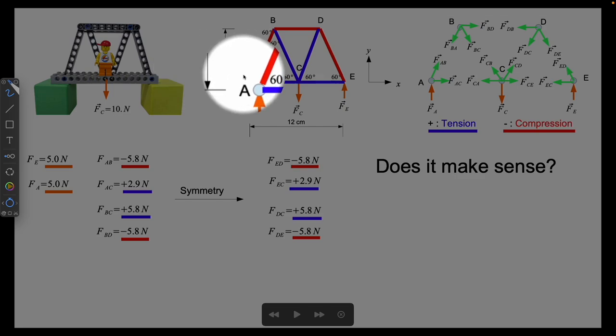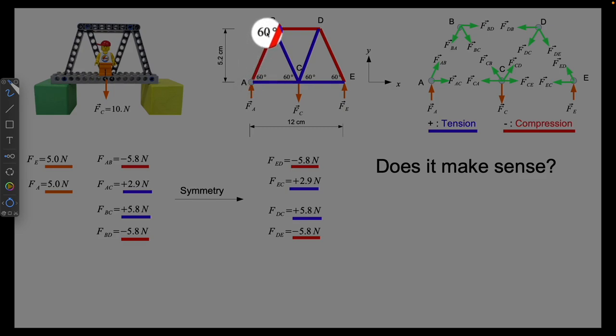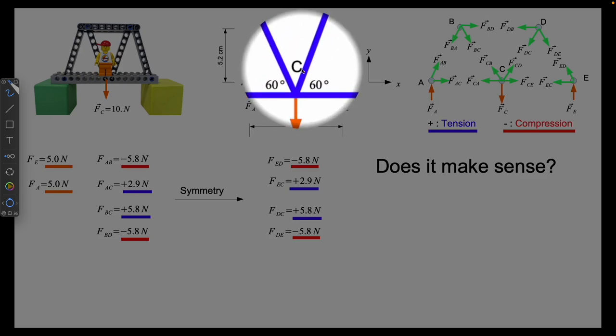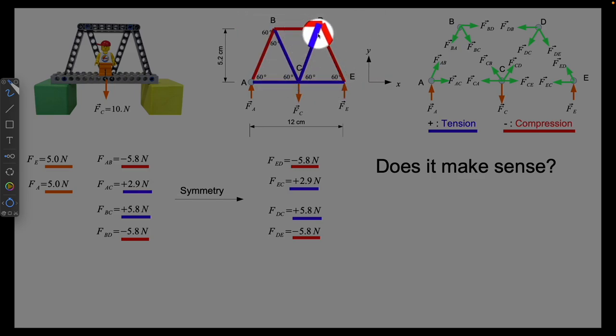If you look at my bridge here, I get that I had a compression around the top and I had tension around here. Tension means I could actually take the member out and replace it by a string.